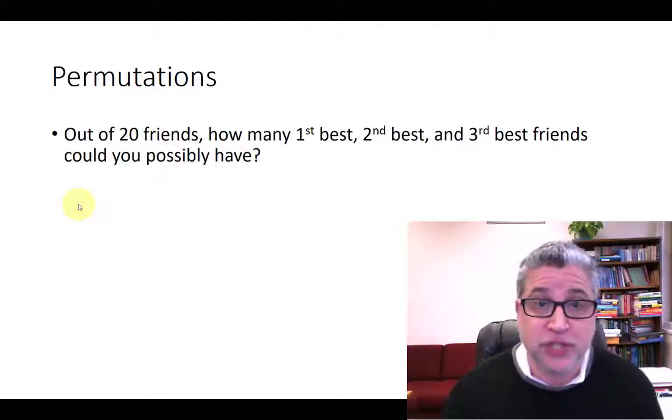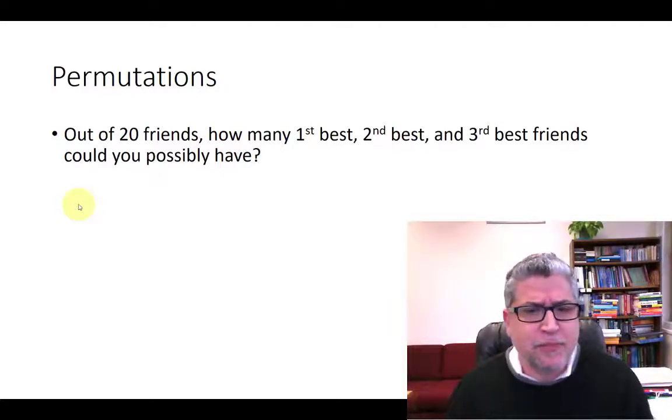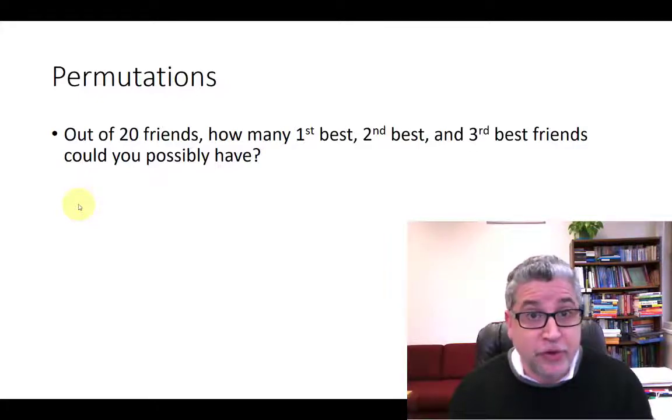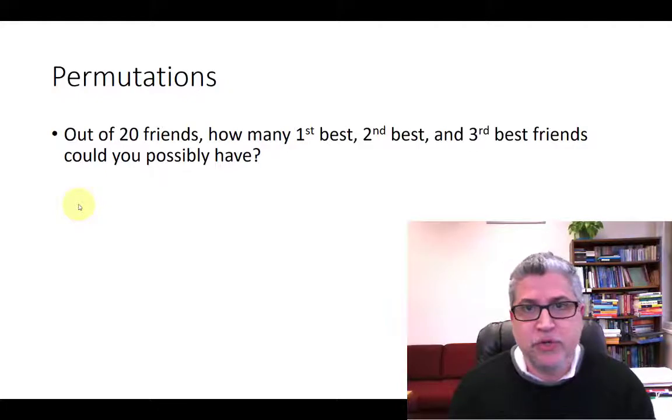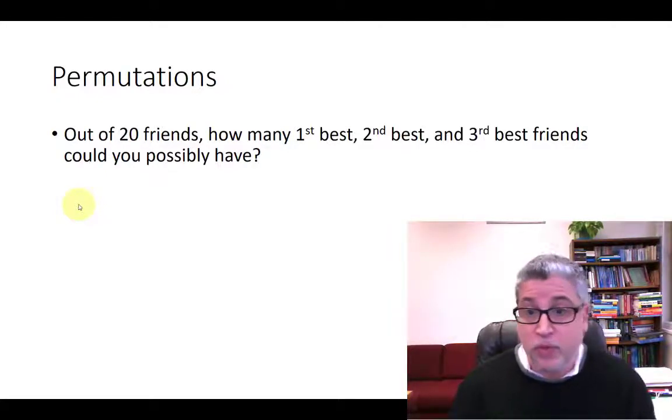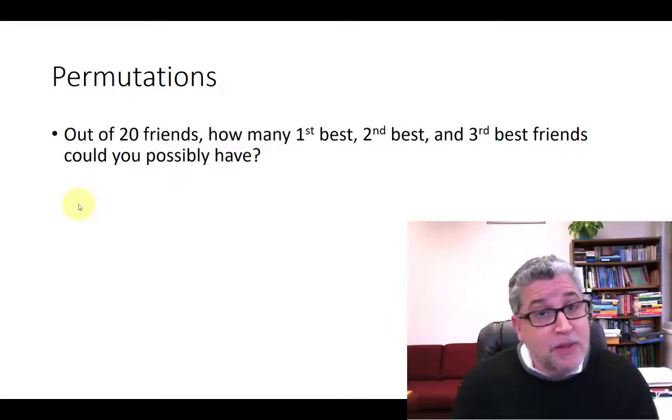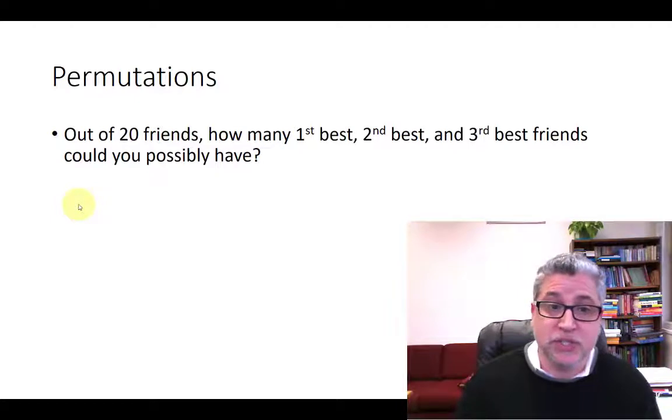Okay. So here's a permutations question. Let's say you've got 20 friends at school. You're like a popular person and you're trying to figure out, who should I rank as my first best friend, second best friend, and third best friend? So order matters here, which means this is a permutations question. So you want to give first, second, and third prize to three people, but it's out of 20 and order matters. This is a permutations question.